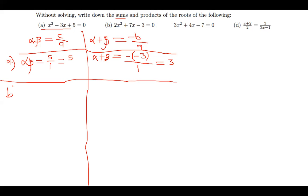For part b, we do the same. Alpha times beta equals c over a. Here c is negative 3 and a is 2, so the product is negative 3 over 2. For the sum, alpha plus beta equals negative b over a. My b is 7, so the sum is negative 7 over 2.